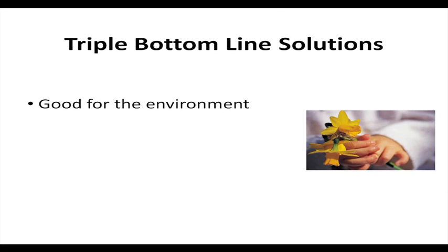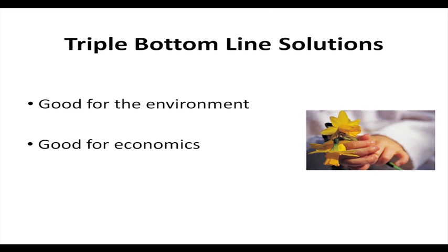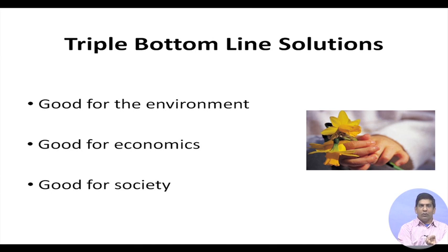When we say triple bottom line solutions, we have to design something which is good for the environment — we should not pollute the environment too much. It should also be good for economics; the economics have to work and it has to be cost effective. If something is very good for the environment but so costly that only a fraction of the population can afford it, then there is no point making that product. Unless lots of people can use it because they can afford it, there will be no real impact — people will still use the product that is not environmentally friendly.